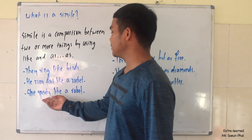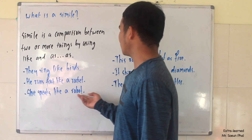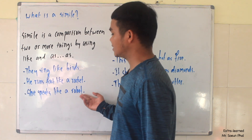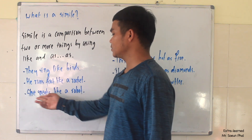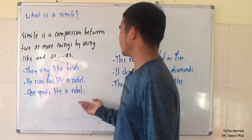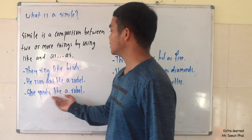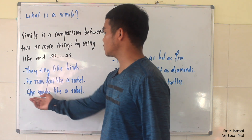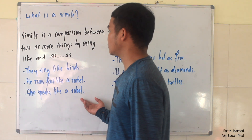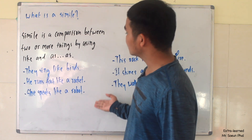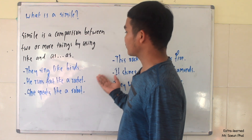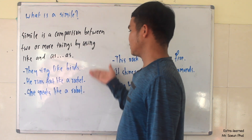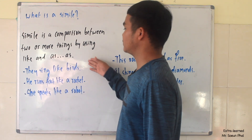Another example: 'She speaks like a robot.' In this sentence, we compare how she speaks to a robot by using 'like.' That means she sounds like a robot when she speaks. When we compare between two or more things using 'like' like this, we call it a simile. So these sentences are similes.